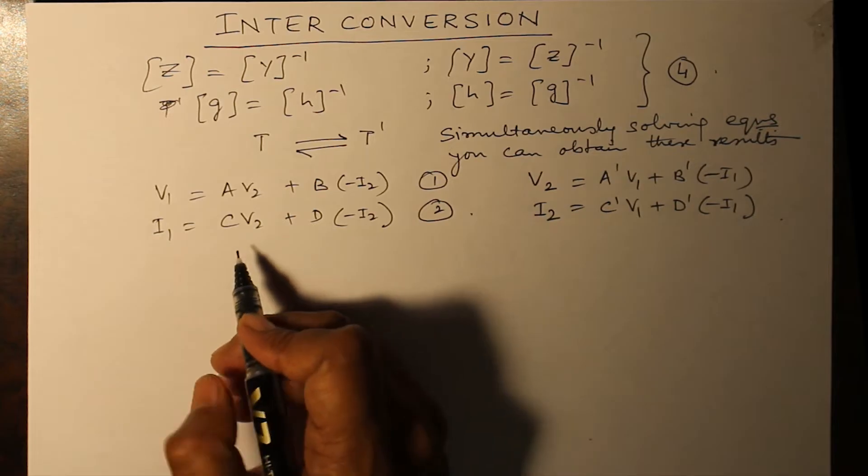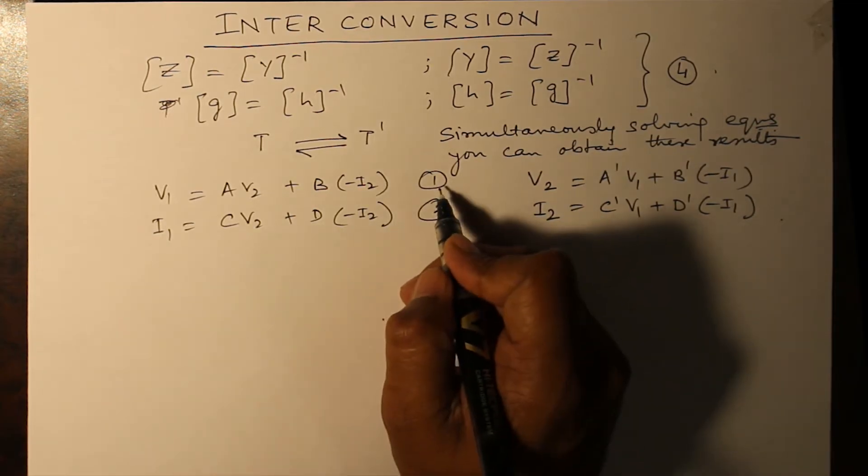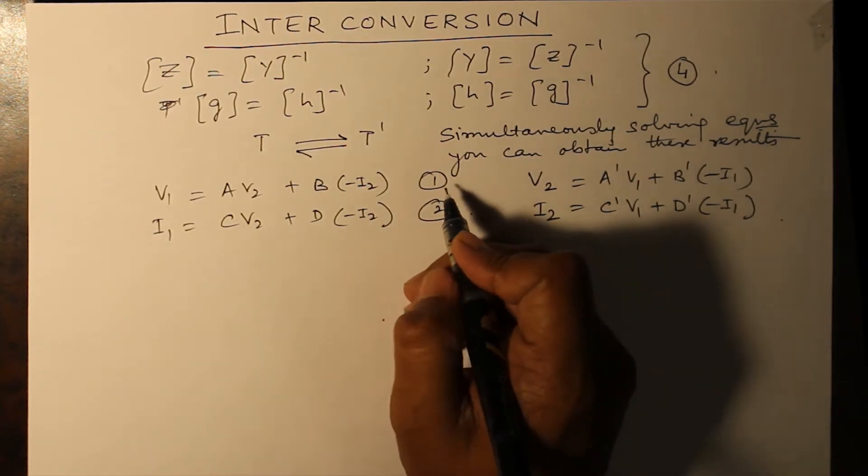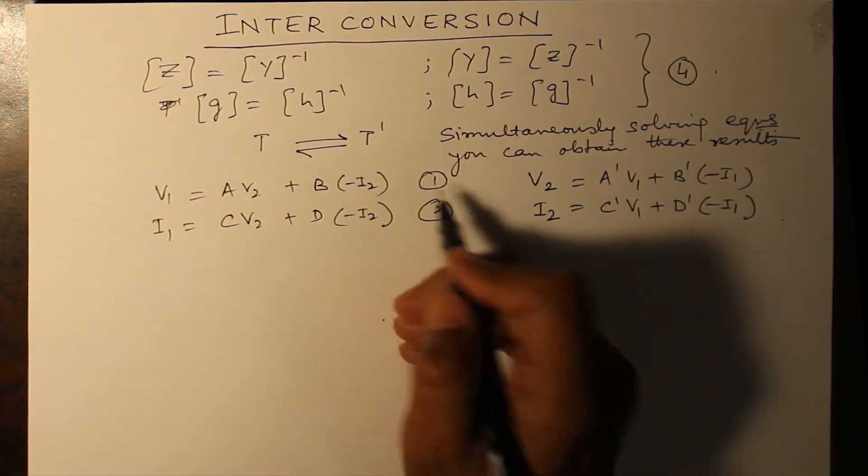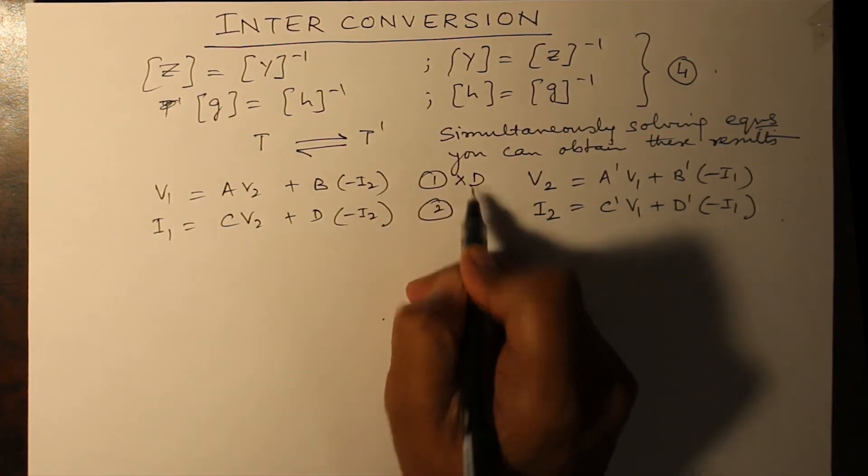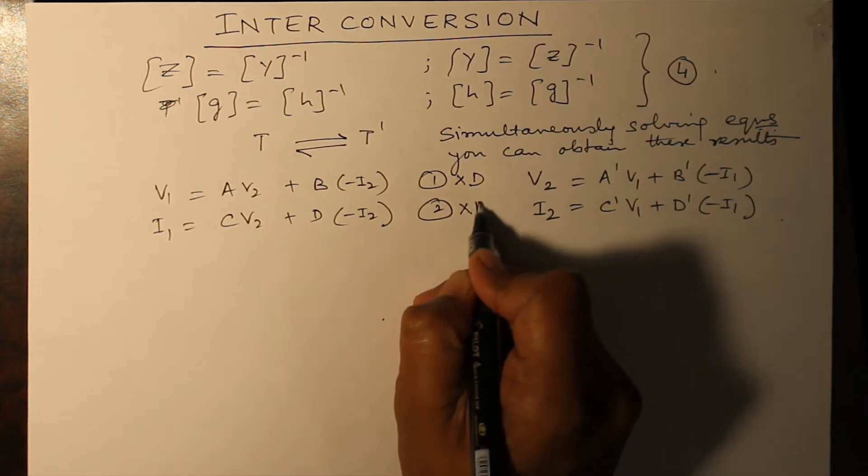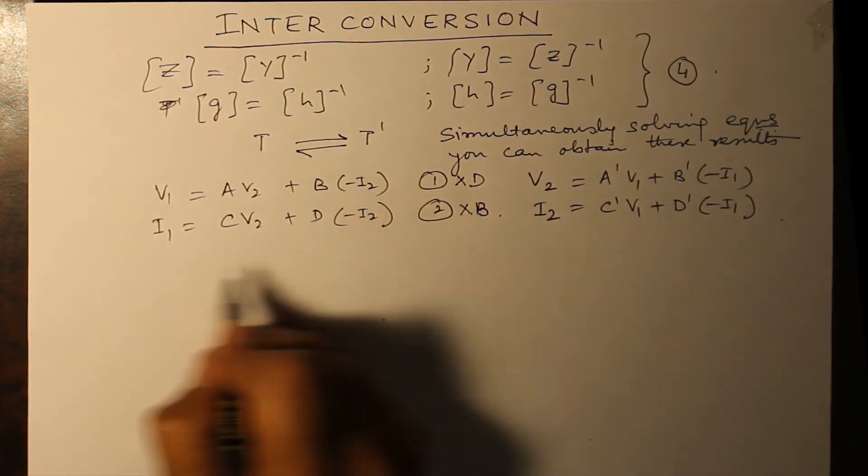For that, what we do is multiply equation one by D and equation two by B, and then subtract.